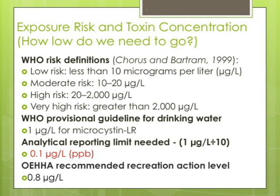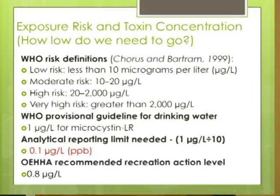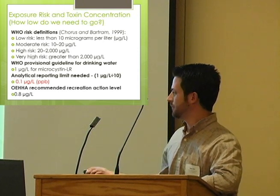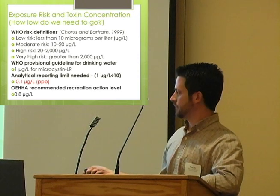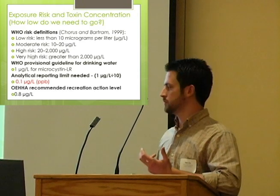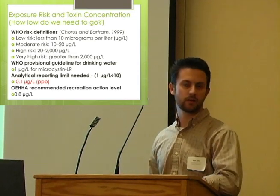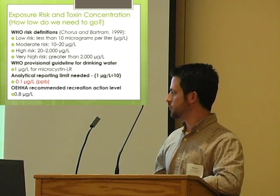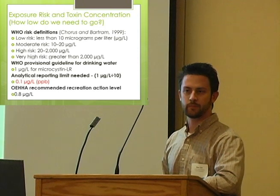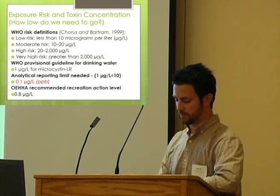Kim covered a lot on toxicity, but from a chemical perspective at the lab, the thresholds from regulatory bodies become an analytical target — how low do we need to detect to answer that concentration question? If you're going off the World Health Organization's guideline for drinking water at 1 microgram per liter, you want to be about ten times lower than that — looking for a method that gets you down to about 0.1 micrograms per liter, or parts per billion. OEHHA has also recommended recreation action levels, and depending on which toxin, that may be lower than that WHO threshold, so these numbers may move around and we may need to respond to that.